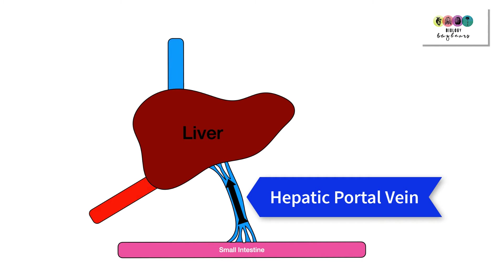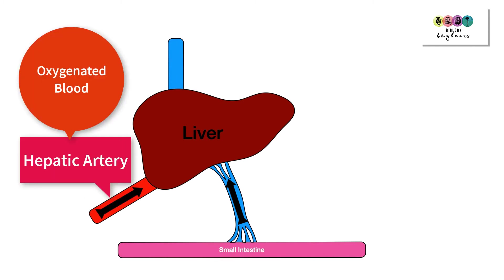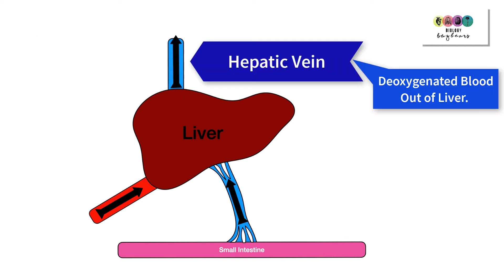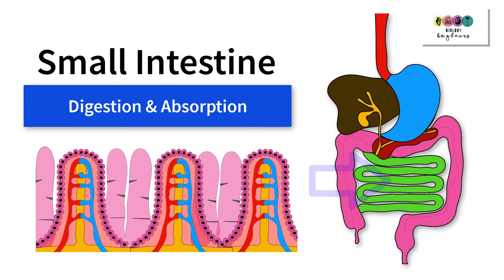Next we have the hepatic artery, which carries oxygenated blood into the liver. And then we have the hepatic vein, which carries deoxygenated blood out of the liver. The small intestine is where most digestion takes place and is completed, and it's also where nutrients are absorbed into the bloodstream, then travel to the liver for processing.